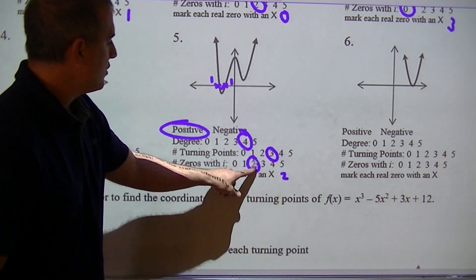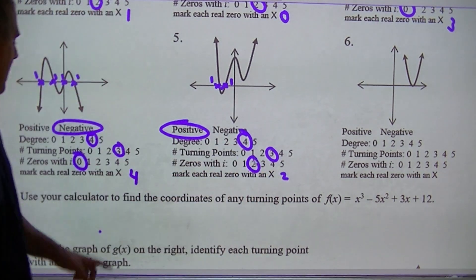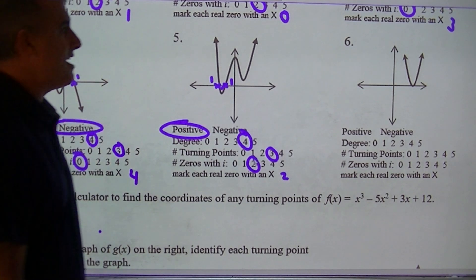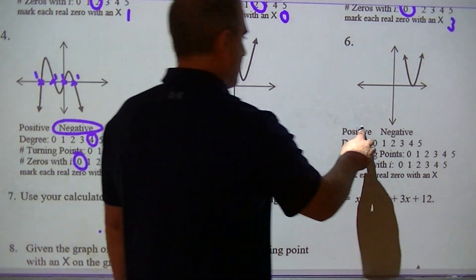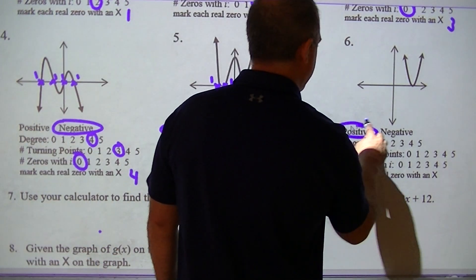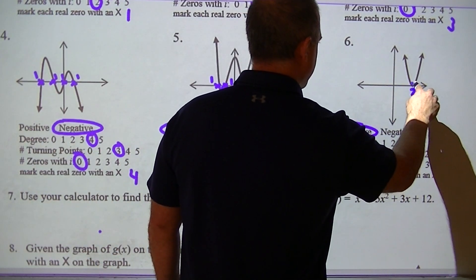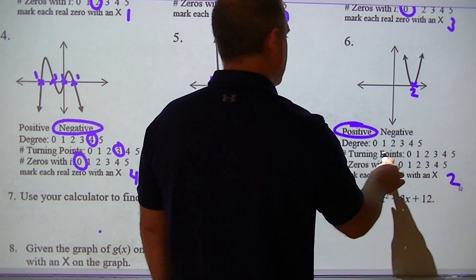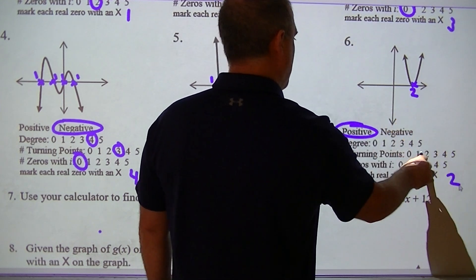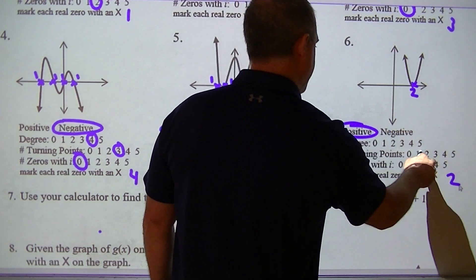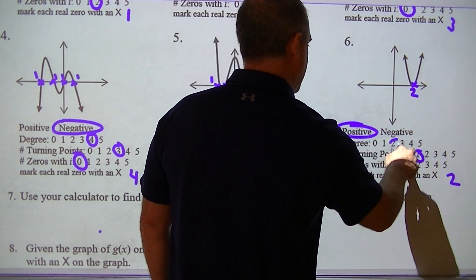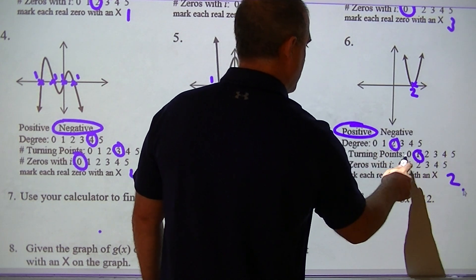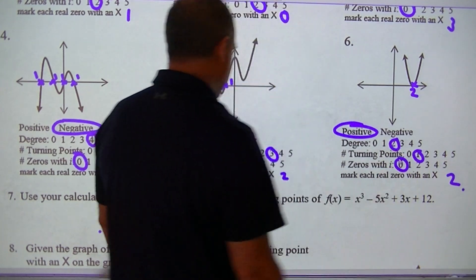The bottom line is these two numbers — real and imaginary zeros — have to add up to the degree. The easiest to find first is the real. This is a positive; this is going to count for two. My turn points: I have one turn point, so degree two. Two plus what would give me two? That would have to be zero.